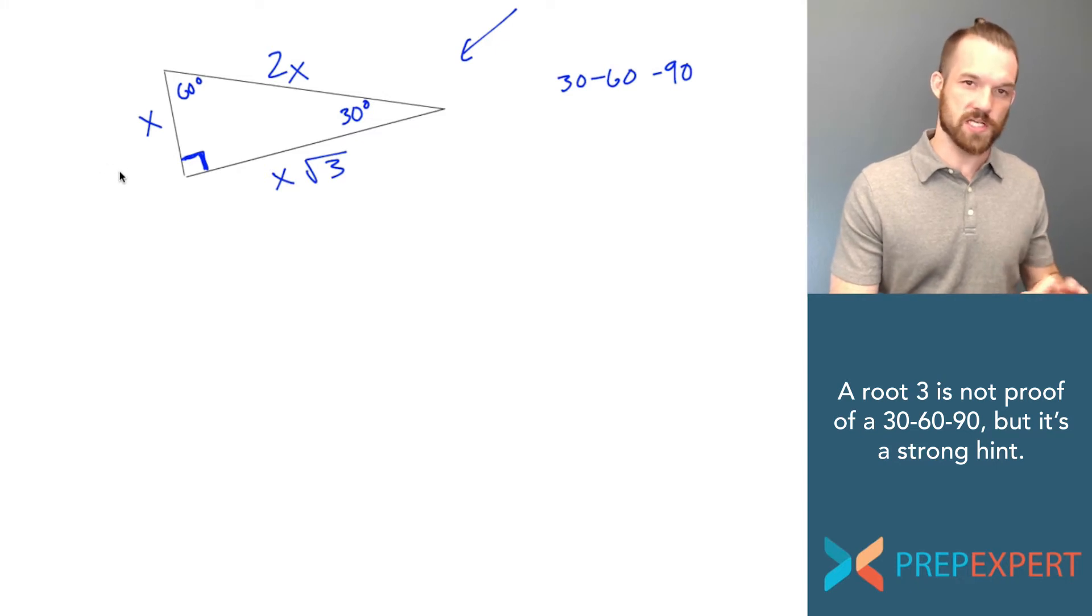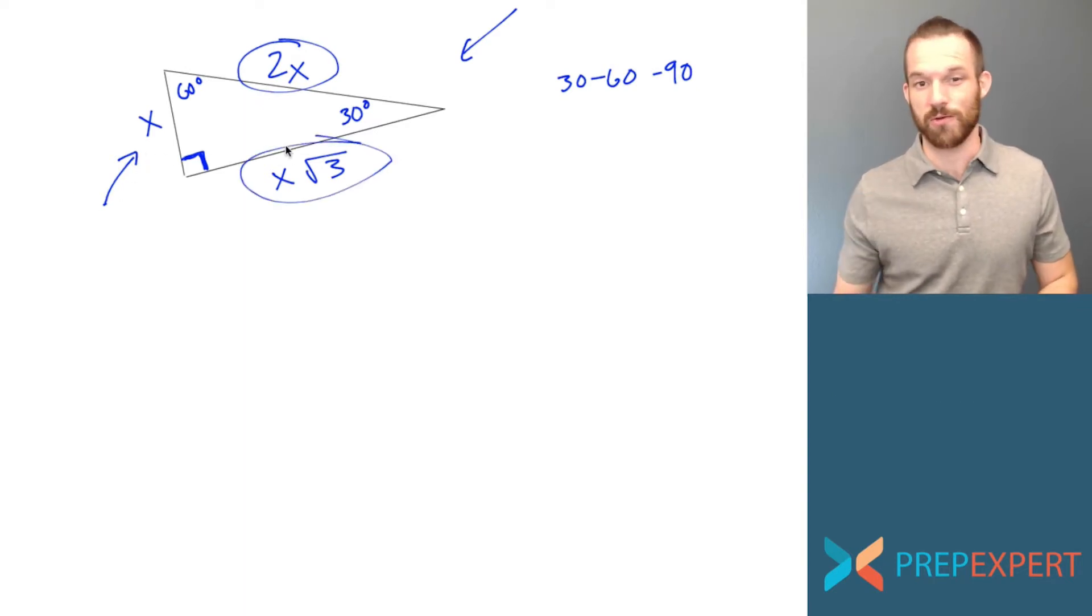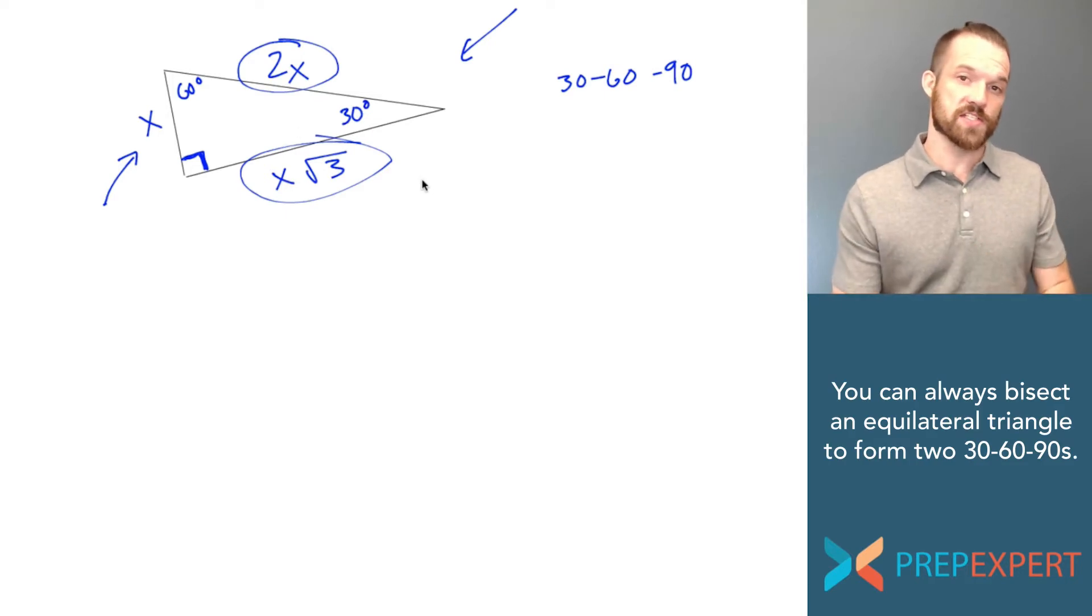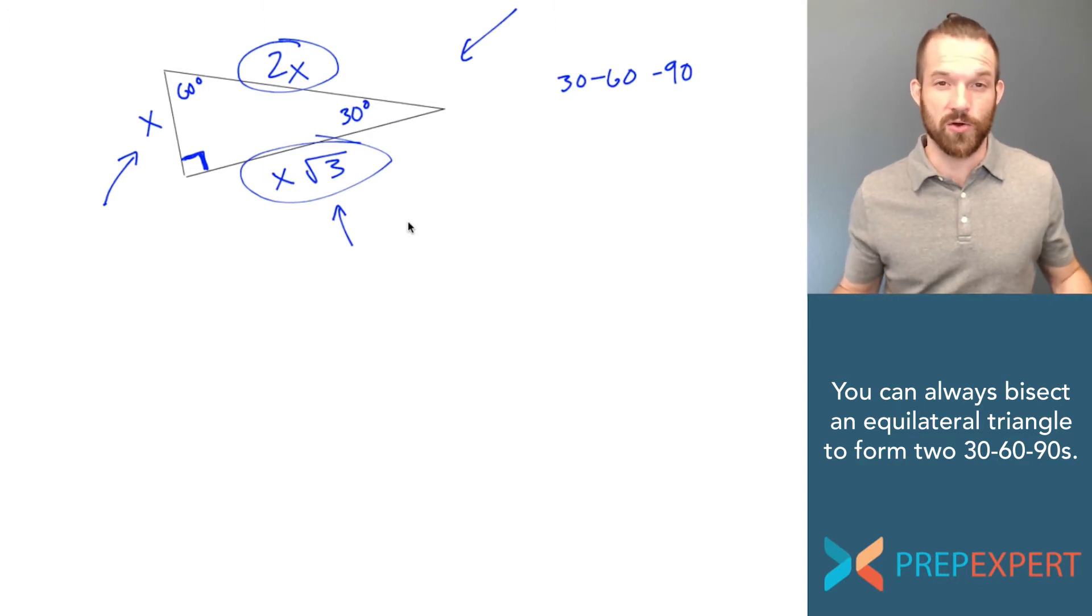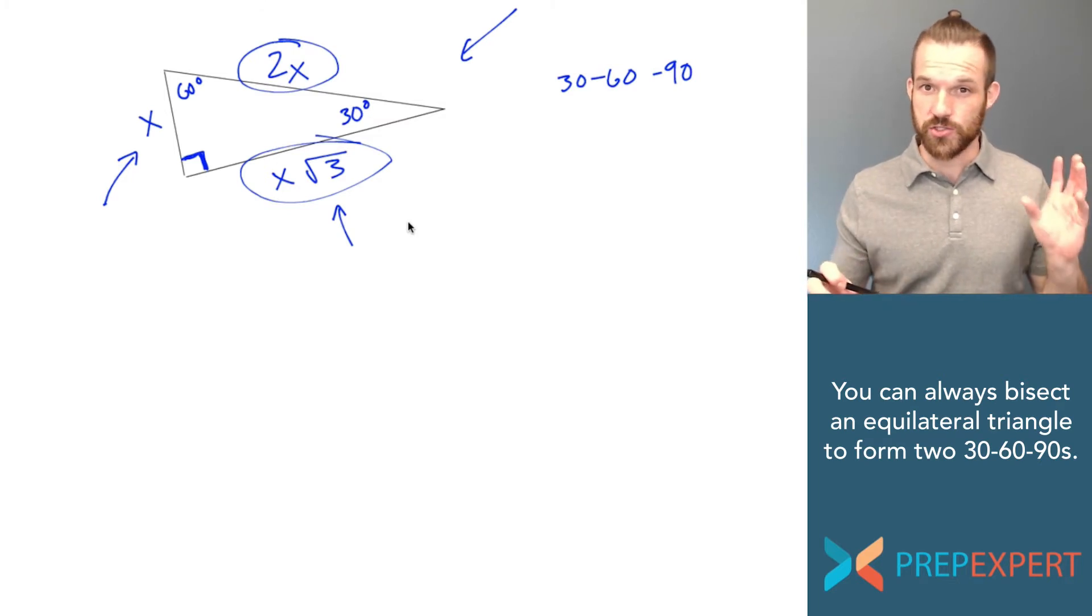Here's how I remember it: start with the short side. Whatever information they give you, find the short side, then double it to find the hypotenuse, and then go back to the short side and multiply it by root 3 to find the long side. Now one more tip: if you ever see a root 3 that gets anywhere near a triangle on the SAT, there's a really high chance that that is a 30-60-90 triangle. In my experience, I have never seen a problem on the SAT that had a root 3 and a triangle but didn't have a 30-60-90 triangle. That's a huge hint that can take a problem that would be really difficult and make it much easier.